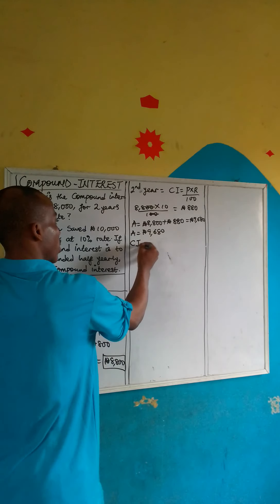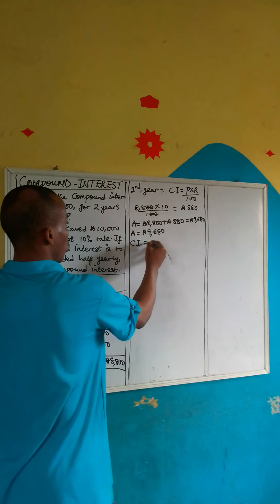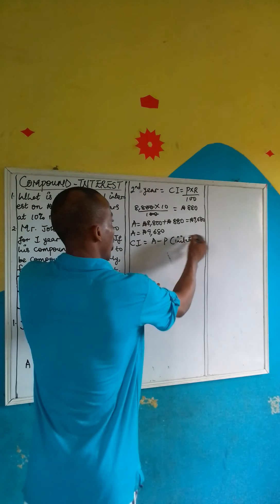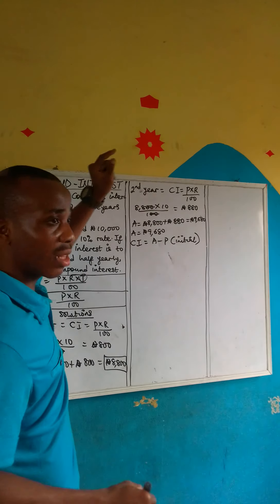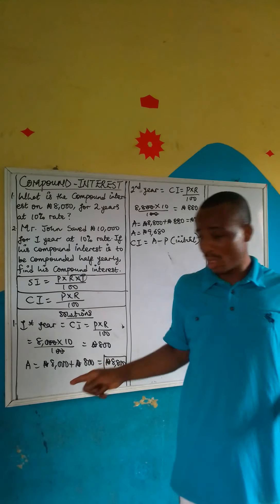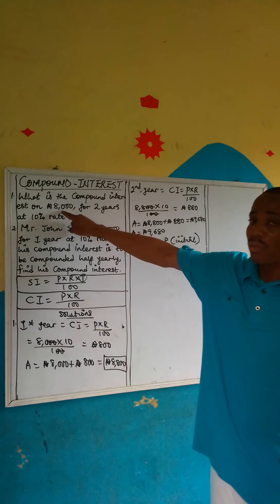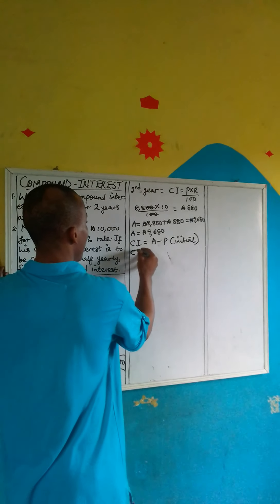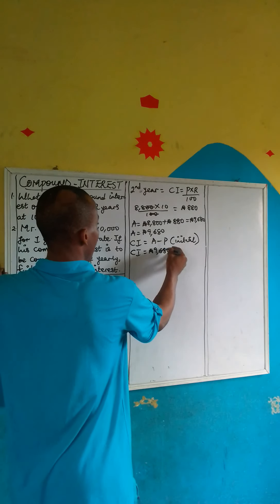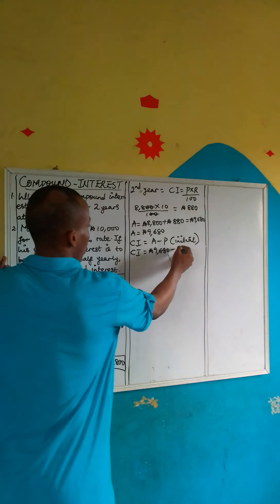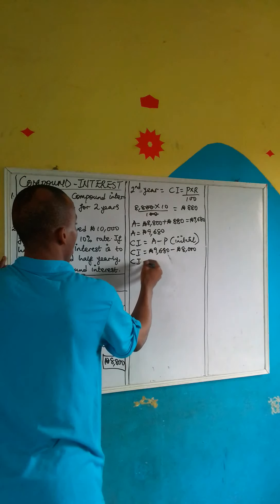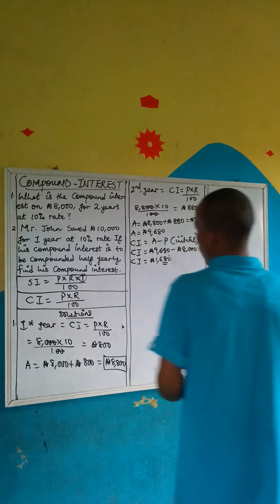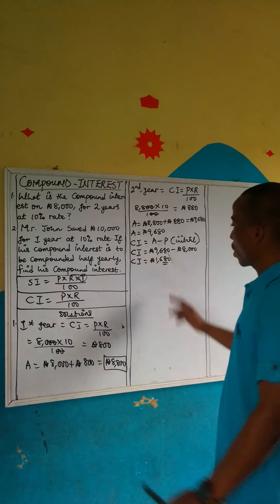Now let's get the compound interest. CI equals amount minus the principal — and this is the initial principal from the question, not the derived one. The initial principal was 8,000. So CI equals 9,680 minus 8,000, which gives us 1,680. That is the compound interest — the answer to question one.